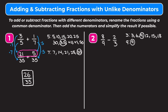We need both fractions to have a denominator of 9. Our first fraction already has a denominator of 9, so we keep 8 ninths as it is. For the second fraction, to get from 3 to 9 we multiply by 3, so we multiply the numerator by 3 also. 2 times 3 gives us 6, so 2 thirds turns into 6 ninths. Now we subtract the numerators: 8 minus 6 is 2. So 8 ninths minus 2 thirds equals 2 ninths.